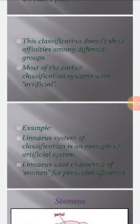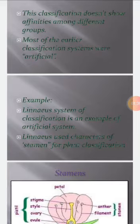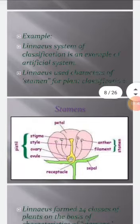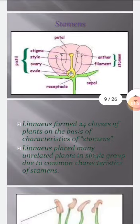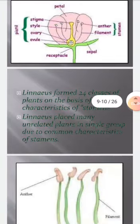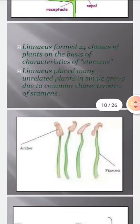An example of the artificial system is the linear system of classification. Linnaeus used characters of stamens, that is, the male parts of the flowers. You can see the female part — pistil, stigma, style, ovary, and ovule — as well as petals, sepals, and stamens, the male parts which consist of anthers and a long stalk called the filament. Linnaeus formed 24 classes of plants on the basis of characteristics of stamens, and placed many unrelated plants in a single group due to common characteristics of stamens.